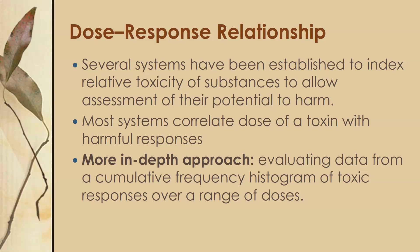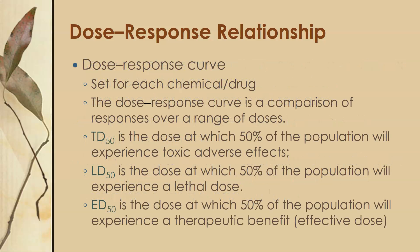Several systems have been established to index the relative toxicity of substances and assess their potential to cause harm. Most systems correlate the dose of a toxin with harmful responses. For a more in-depth approach, you evaluate data from the cumulative frequency histogram of toxic responses over a range of doses — and the response is not always linear, which is one of the challenges in toxicology. A dose-response curve can be set for each chemical or drug.